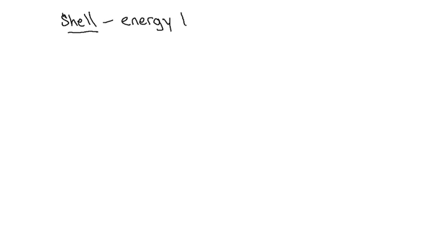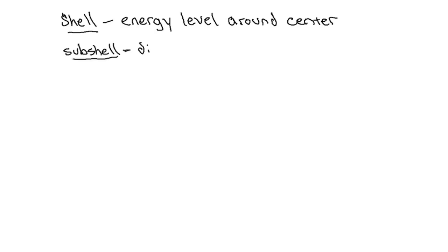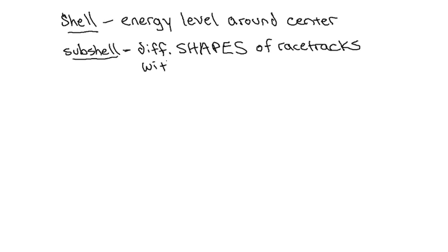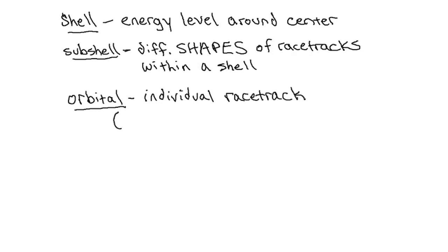Okay, to review real quick: the shell is the energy level around the center. The subshell describes the different shapes of racetracks within that one shell, and an orbital is the individual racetrack itself. An orbital can only have two cars maximum per racetrack. It can be the same subshell because the racetrack can be in the same shape, but it's going to be a different racetrack just in the same shape on the same shell.